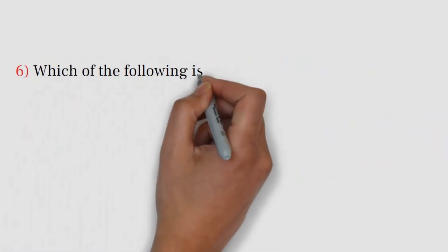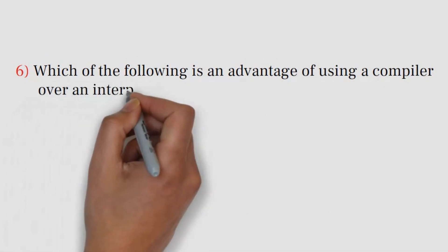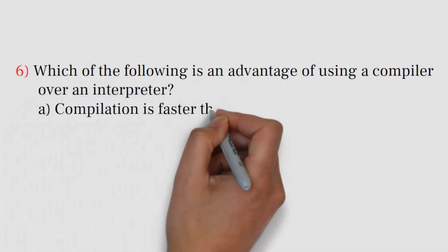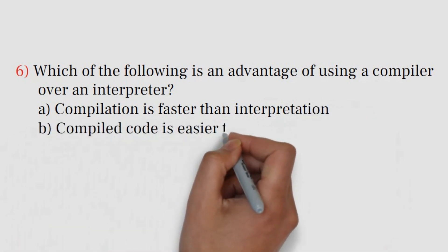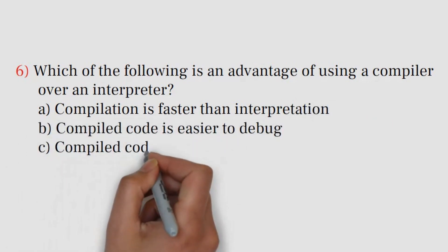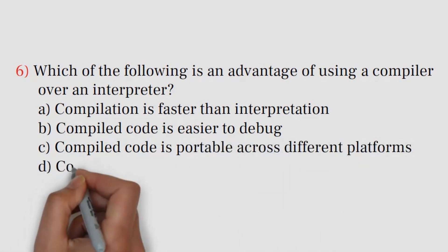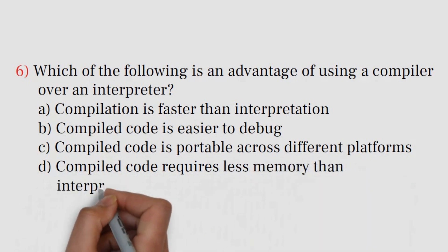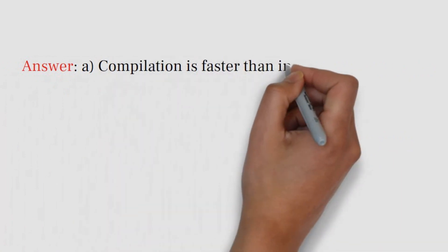Question number 6. Which of the following is an advantage of using a compiler over an interpreter? A. Compilation is faster than interpretation. B. Compiled code is easier to debug. C. Compiled code is portable across different platforms. D. Compiled code requires less memory than interpreted code. Answer: A. Compilation is faster than interpretation.